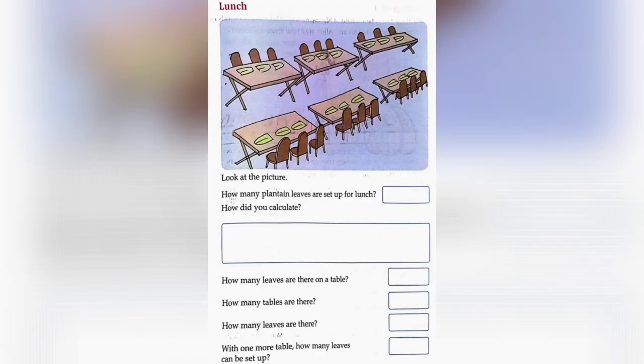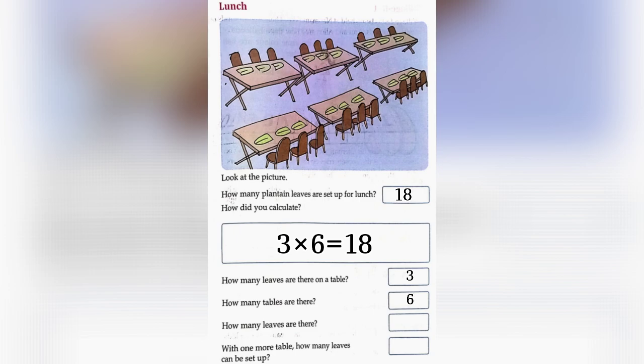Lunch: Look at the picture. How many plantain leaves are set up for lunch? 18. How did you calculate? 3 into 6 is equal to 18. How many leaves are there on a table? 3. How many tables are there? 6. How many leaves are there? So, 3 into 6 is equal to 18.